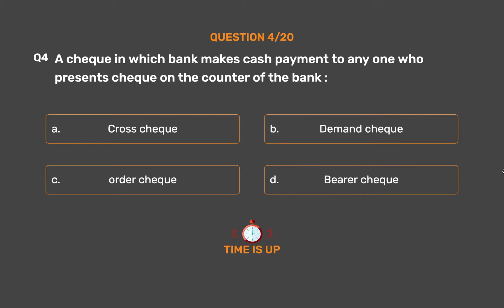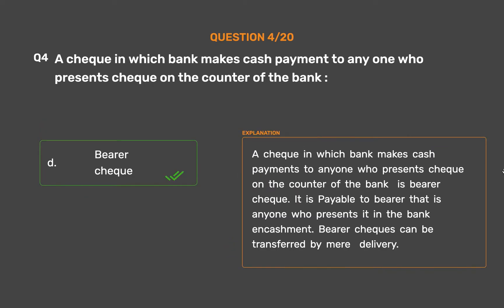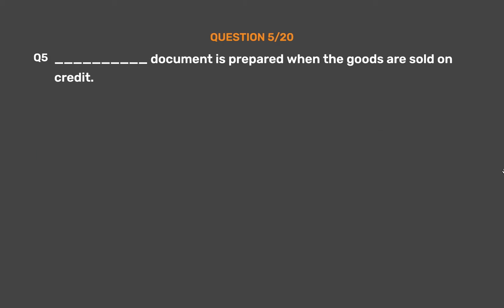The correct answer is option D: bearer check. A check in which the bank makes cash payments to anyone who presents the check on the counter of the bank is a bearer check. It is payable to the bearer — that is, anyone who presents it at the bank for encashment. Bearer checks can be transferred by mere delivery.